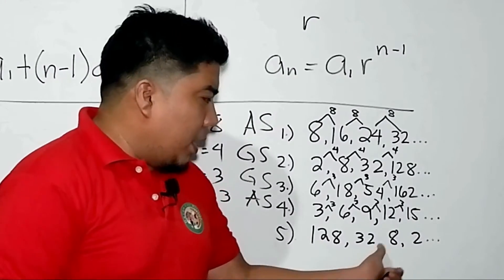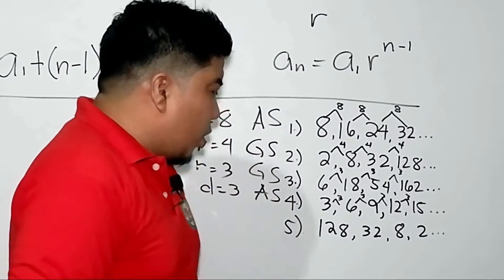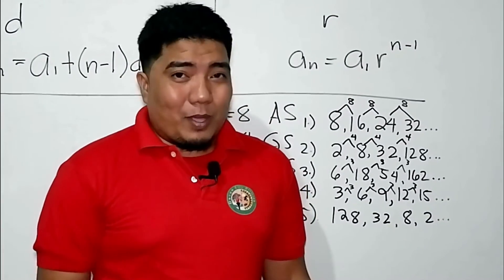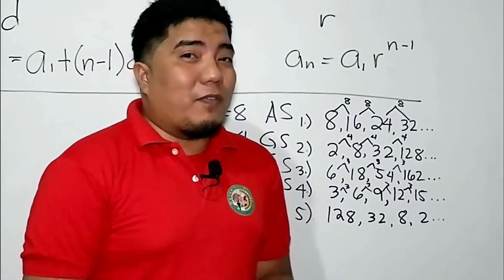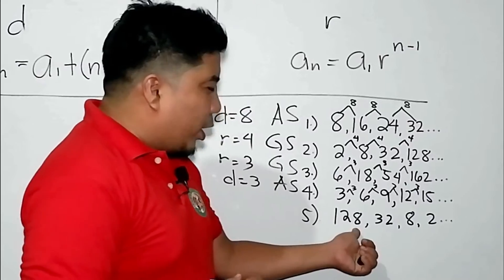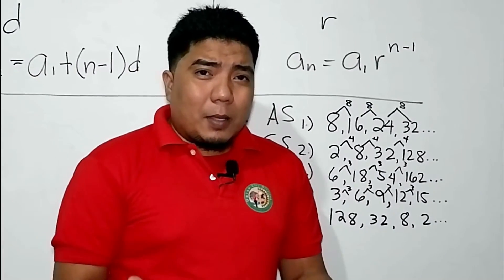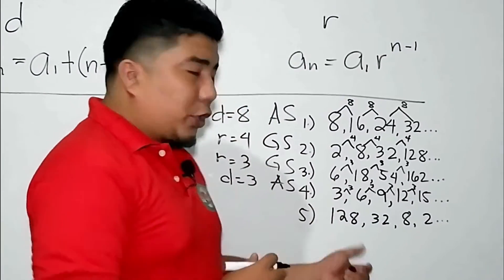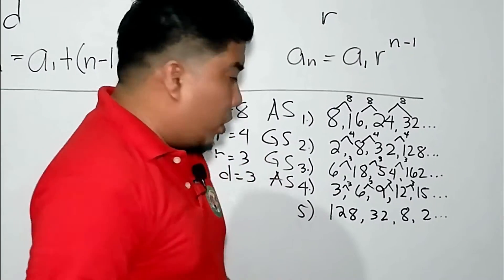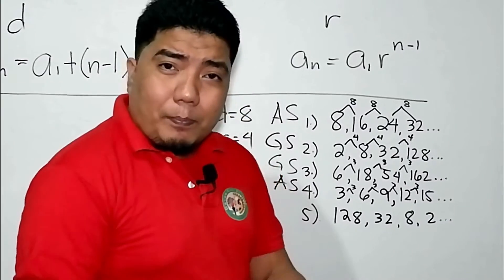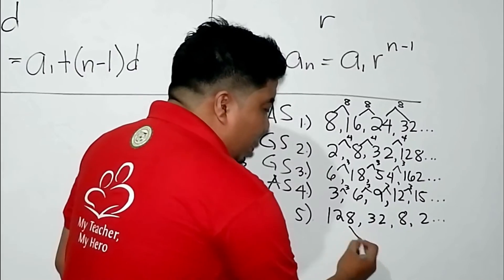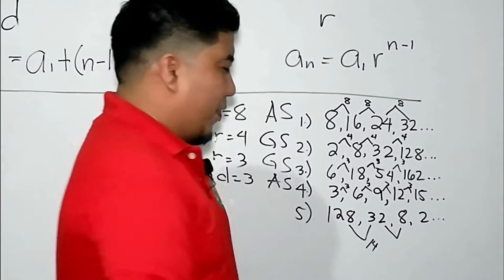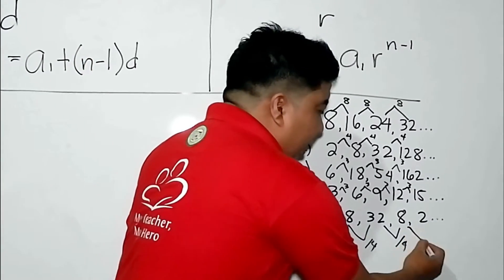For the fifth example: 128, 32, 8, 2. By just looking at it, the differences between consecutive terms are not the same, so we can skip directly to checking multiplication or division. Since the numbers are getting smaller, we know division is involved. What was 128 divided by to become 32? That is 4 — so divided by 4. What happened to 32 to become 8? Divided by 4. What happened to 8 to become 2? Still divided by 4.